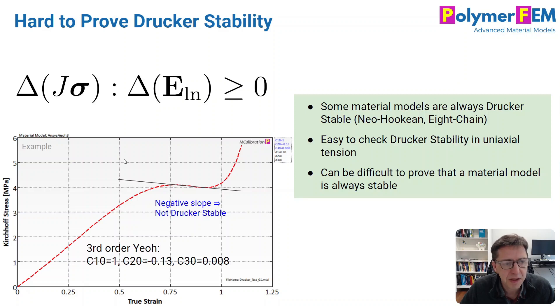In my example, I picked a C20 parameter that is slightly negative. And then it ended up with a region here in which we have a negative slope of the stress strain curve. And that's in violation of the Drucker stability condition.